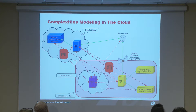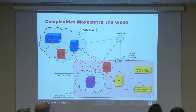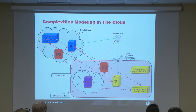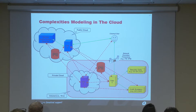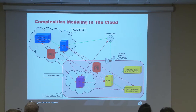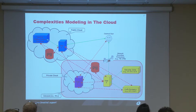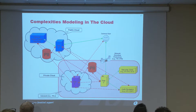Especially when you throw geolocation into it. You've got an app that has users in Europe — now you've got two sets of privacy laws, you've got Safe Harbor. This is what we mean when we say the complexity of modeling in the cloud is that it is in the cloud.